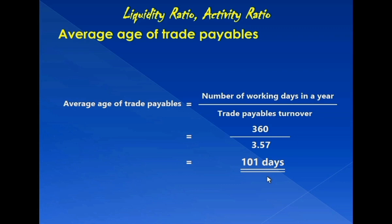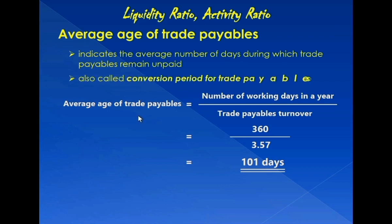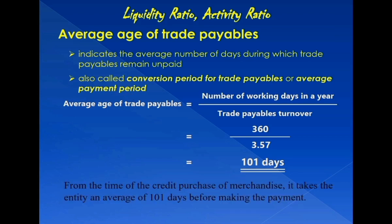The average age of trade payables indicates the average number of days during which trade payables remain unpaid. It is also known as the conversion period for trade payables, or more simply, the average payment period. For Elizabeth Tayloring Materials Store, it takes an average of 101 days from the time of purchase of merchandise on account before payment is made to the supplier.